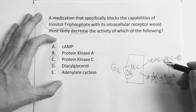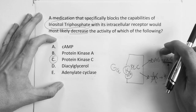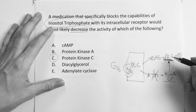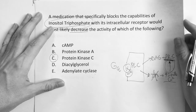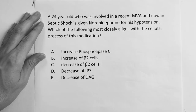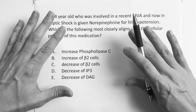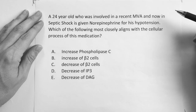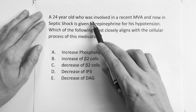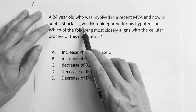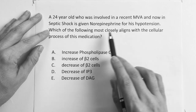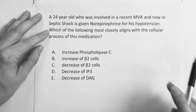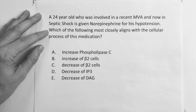If there's one thing to take away from this video: memorize the G proteins, have these pathways cold, and know that extra connection between IP3 → intracellular calcium → protein kinase C, because that's the kind of obscure detail they like to test on.